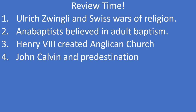Martin Luther was not the only one trying to enact religious reforms. Ulrich Zwingli was attempting to practice a reformed faith when war broke out in Switzerland between Catholics and Protestants — a war which claimed Zwingli's life. The Anabaptists believed in adult baptism because they felt religious conversion should be voluntary; most Anabaptists were peaceful, though some briefly took control of the German city of Münster. In England, Henry VIII created an entirely new church — the Anglican Church — when he could not get his marriage annulled. Finally, John Calvin and his followers believed in the idea of predestination and that there were three general tests to indicate whether someone was one of the righteous.